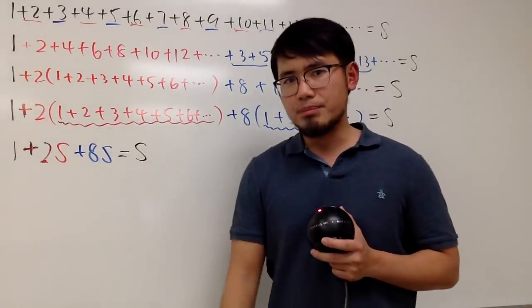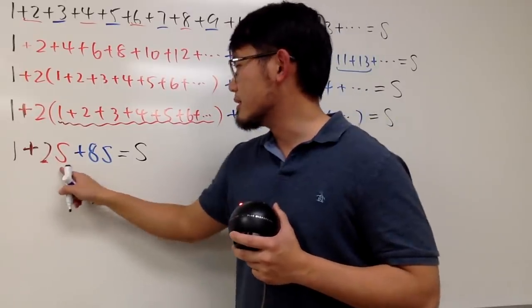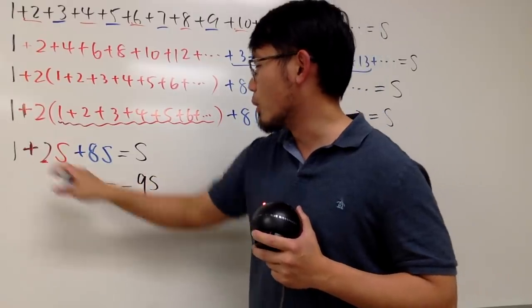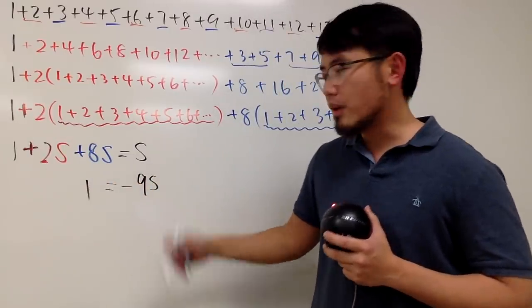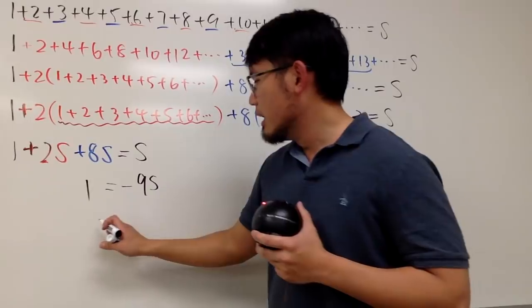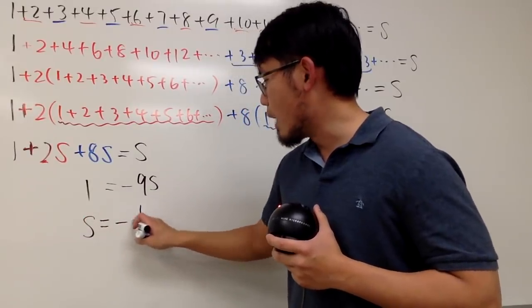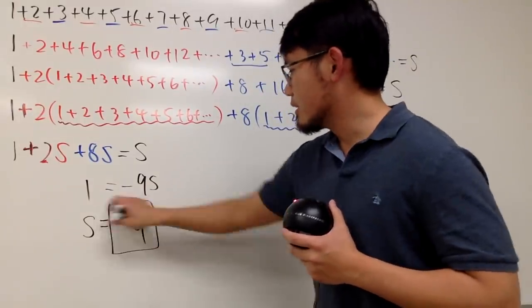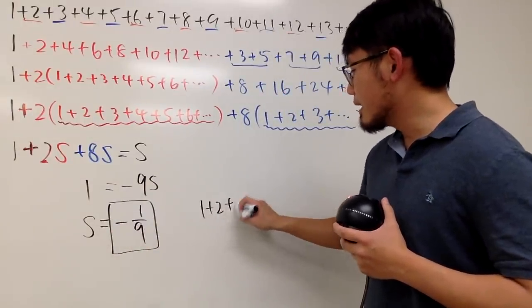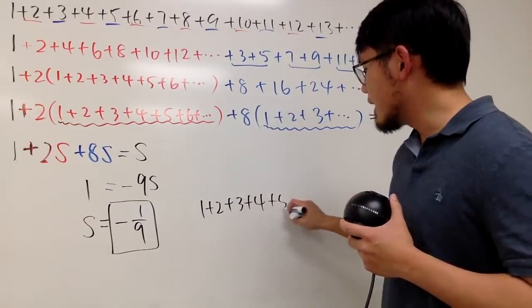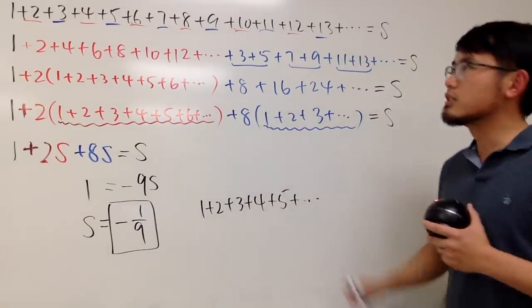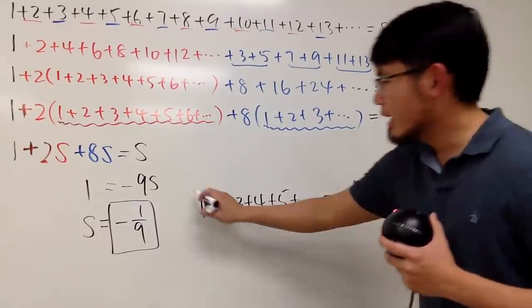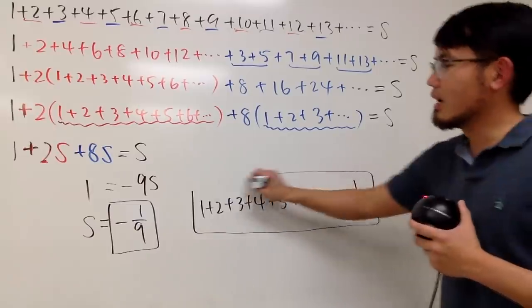And now, we can just solve this simple equation. Of course, this right here is 10S. Move to the right-hand side, you get negative 9S. And of course, you still have the 1 on the left-hand side. If you want to solve for x, divide negative 9 both sides. In other words, you get S equals negative 1 over 9. So, this is the answer. In other words, 1 plus 2 plus 3 plus 4 plus 5 plus dot dot dot, so on, forever, is equal to negative 1 over 9. I think this right here can trigger a lot of people.